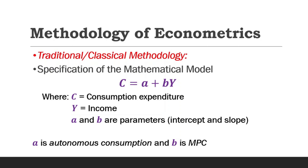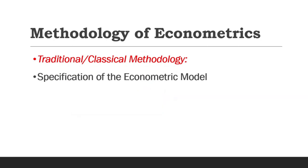So after specifying the mathematical model, then you specify the econometric model. So a typical econometric model of the consumption theory is of the form Y equals beta one plus beta two X plus U.